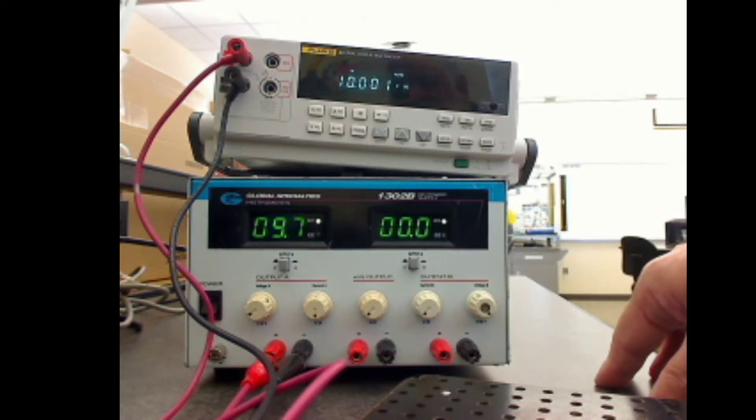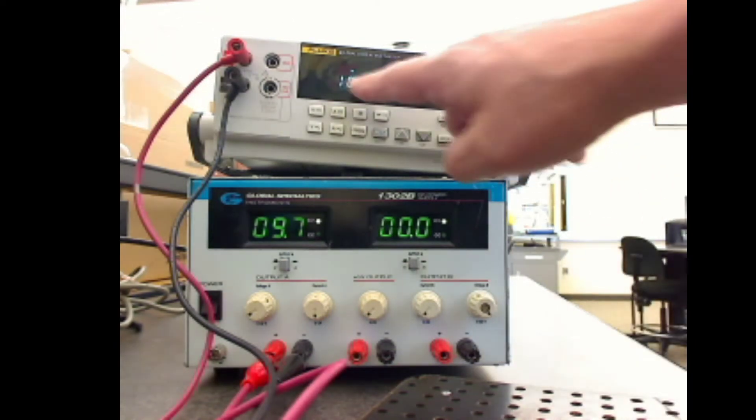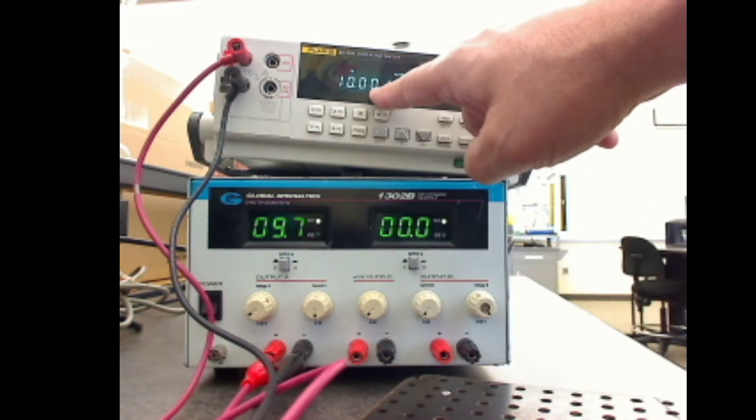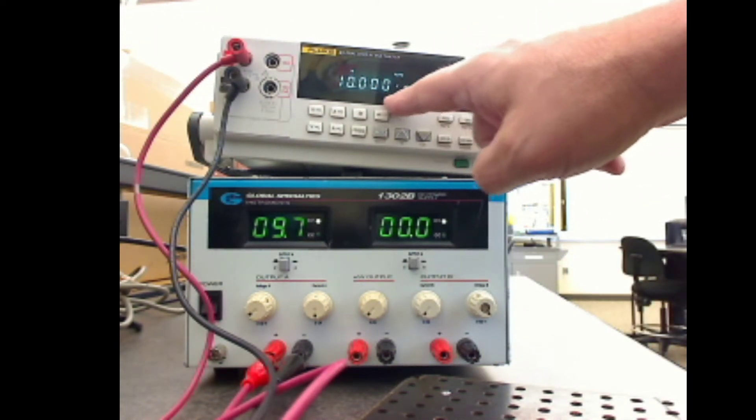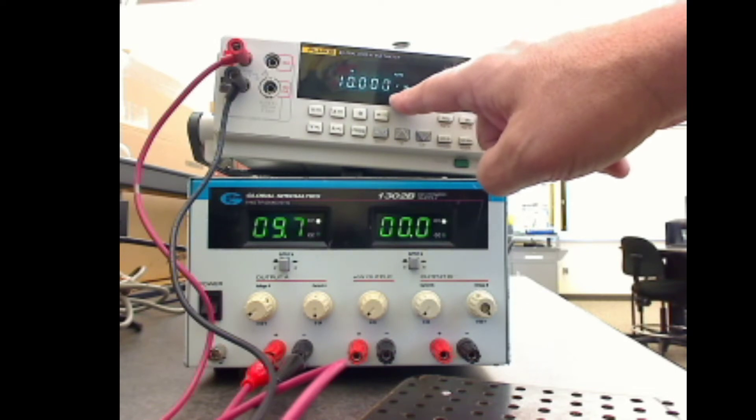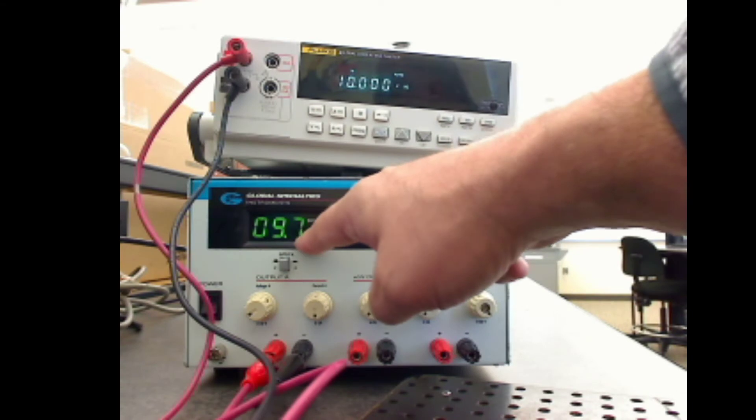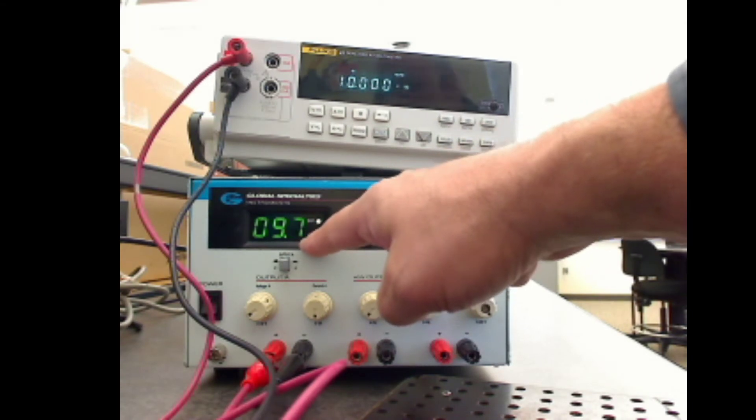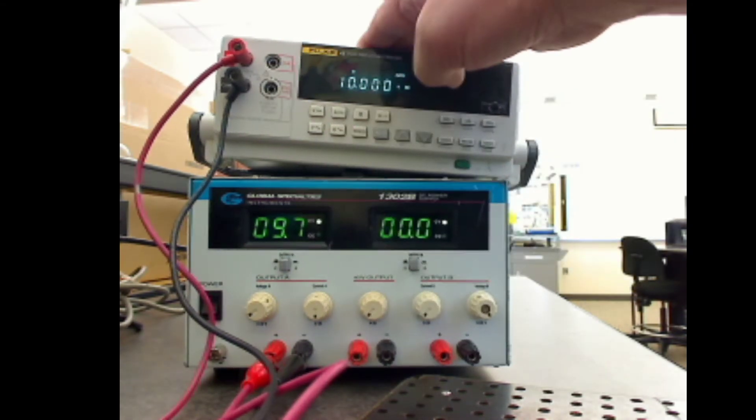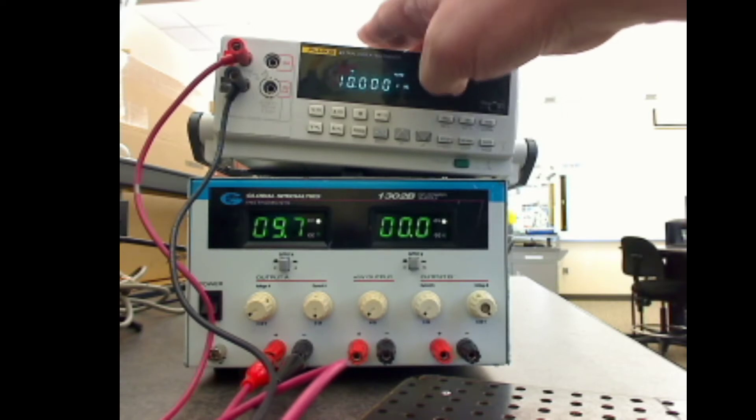Remember, when you're using these power supplies, number one: always use the meter to set the voltage. So you can see my digital multimeter is set to 10.00 volts, and yet the display is showing 9.7 on it. So you always want to make sure that you set your voltage with the meter.